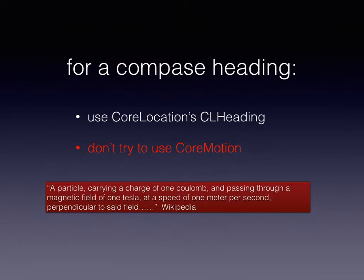We're going to be talking about core location and what it actually measures. In this part, I'm going to be talking about true and magnetic north. In the second part of this series, I'm going to be talking about coordinates and the distances between coordinates. And then in the latter sections, we're going to be talking about coding in core location.